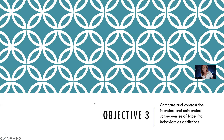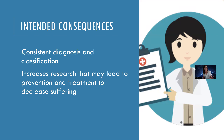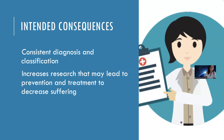Objective number three — comparing and contrasting the intended and unintended consequences of labeling behaviors as addiction. Why would anyone want to do it? The intended consequence is that you get consistent diagnosis and consistent classification. Right now nobody really knows — what is a social media addiction here is different from what it is somewhere else. But if we can get it in the DSM, then we have a very consistent way of diagnosing. That also tends to increase research that may lead to prevention and treatment to decrease suffering in people. So these are the benign things — the advantages of treating behavioral addictions as disorders.